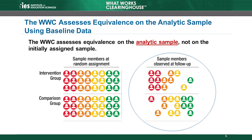The analytic sample is the group of students illustrated on the right. The WWC does not assess baseline equivalence on the units that the study initially randomly assigned — the students on the left — because equivalence on the initial sample would not reflect changes to the sample through attrition. These changes could introduce bias to the impact estimates, which can only be detected by assessing equivalence on the analytic sample. That's why we assess equivalence on the analytic sample used to estimate impacts.